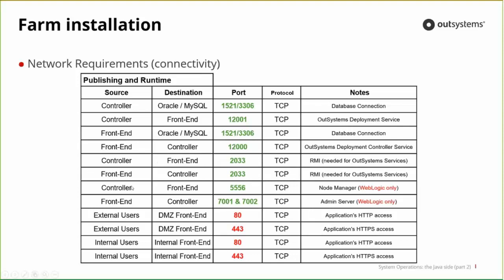The controller also communicates to the frontend. If using WebLogic, port 5556 is required for the node manager, and ports 7001/7002 for the admin server. In terms of runtime, the only ports you need to open to the outside are 80 and 443 for HTTP and HTTPS access.